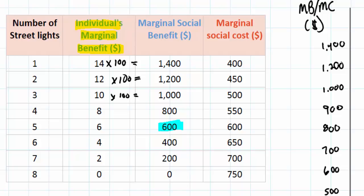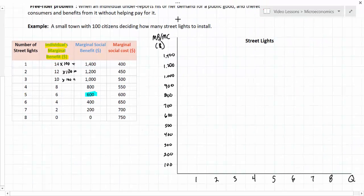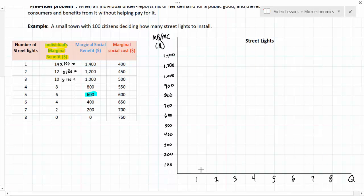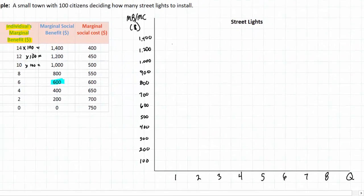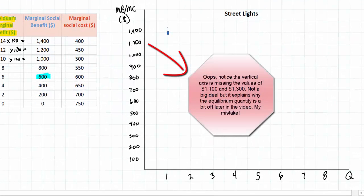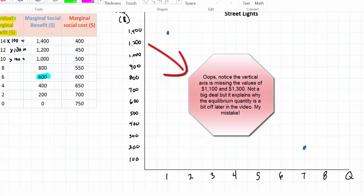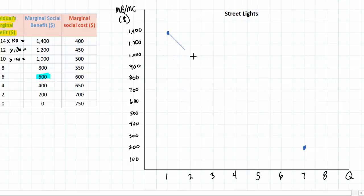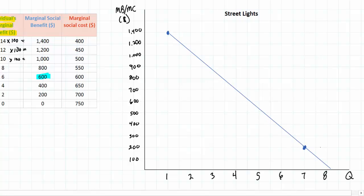We can easily graph the social marginal benefit curve by plotting the relationship between the quantity of street lamps and the willingness of society as a whole to pay. For the first street lamp, society is willing to pay fourteen hundred dollars, so I can put a point right here on my marginal social benefit curve. The seventh street lamp society is willing to pay two hundred dollars for, so I can put a point at a quantity of seven and two hundred dollars. Connecting these two points gives us this community's marginal social benefit curve — the blue line representing the marginal social benefit for street lamps.